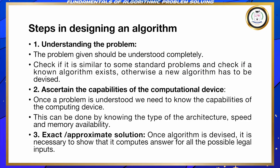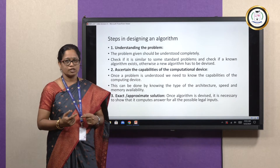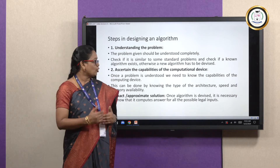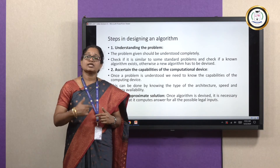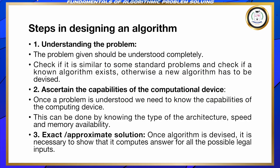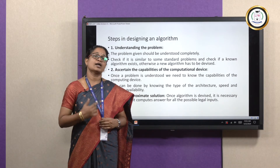After understanding the problem, check if the problem is similar to some existing ones. If so, that is not a problem; otherwise, you have to devise a new algorithm. The second step is to find the capabilities of the computational device by knowing the type of architecture, the speed, and memory availability of the device. The third step is to show that the algorithm computes an answer for all possible inputs — either an exact solution or an approximate solution.